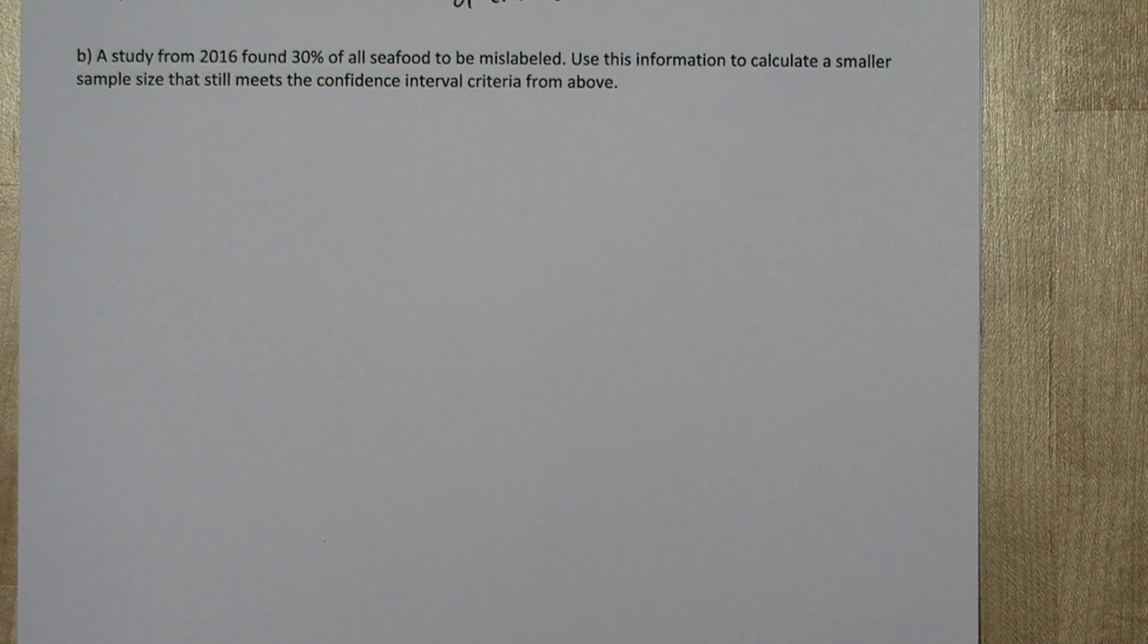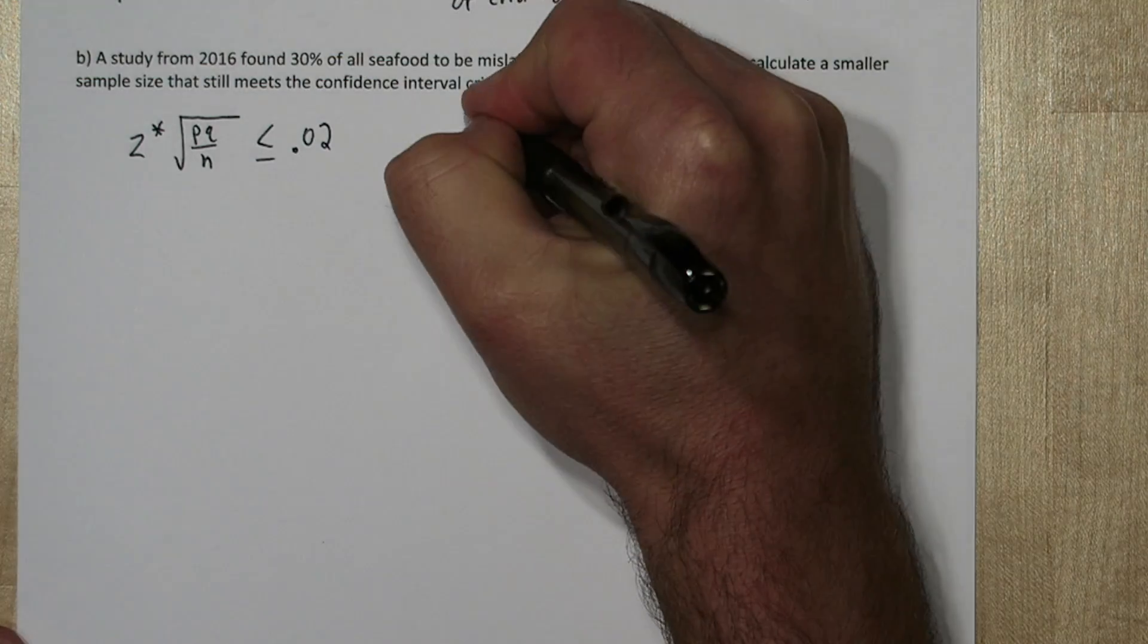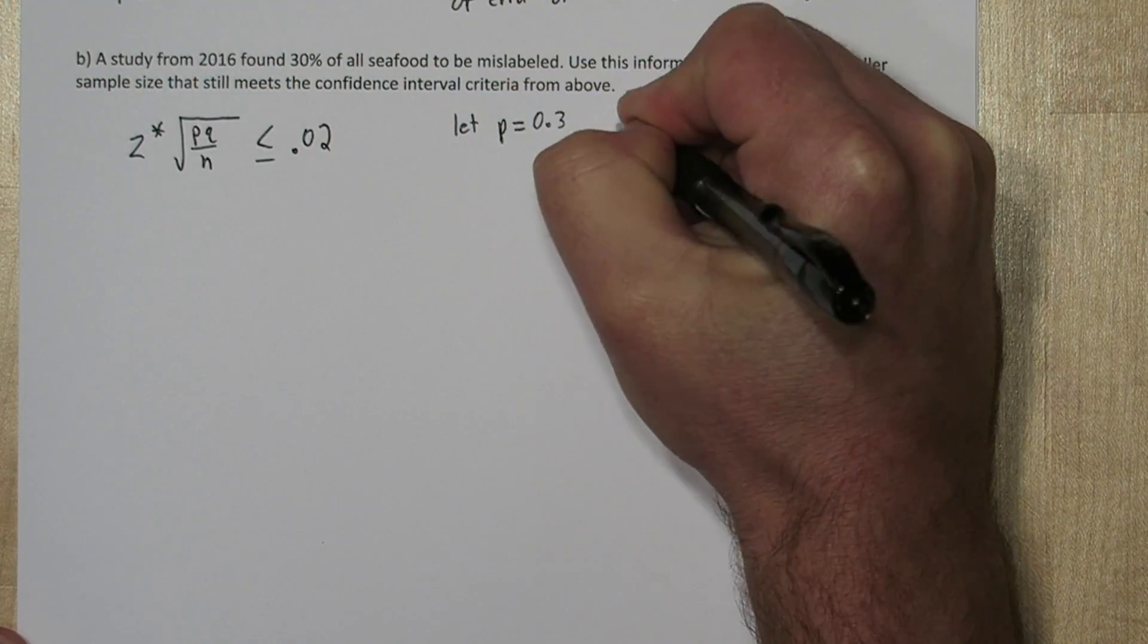With this new information, we're going to use the same formula, but this time we can let p equal 0.3 and the complement be 0.7, and we'll use our same critical value from above.